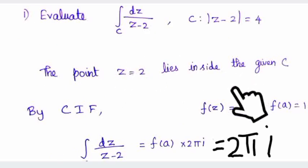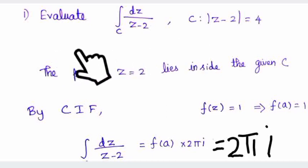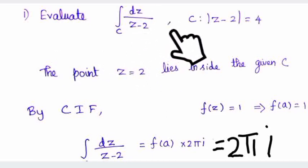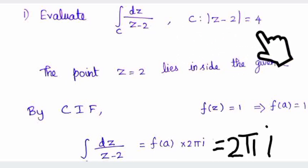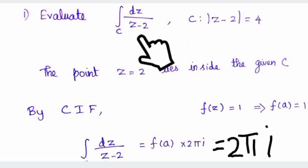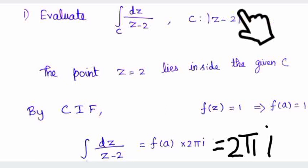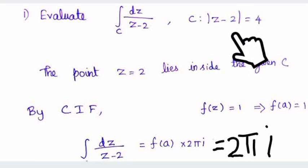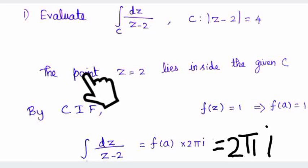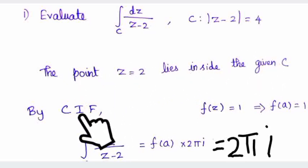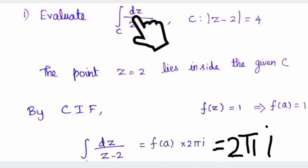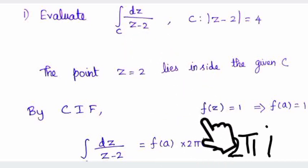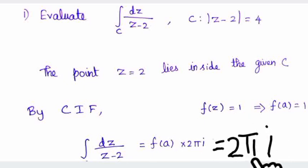Let's look at a simple example. Given: evaluate the integral over C of dz/(z − 2), where the circle is |z − 2| = 4. First, check the point z = 2. The circle has center 2 and radius 4. The point 2 is inside the circle, so we apply the Cauchy Integral Formula: ∮_C dz/(z − 2) = f(a) · 2πi. Here f(z) = 1, so f(a) = 1, and the answer is 2πi.